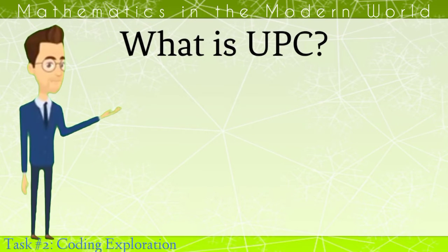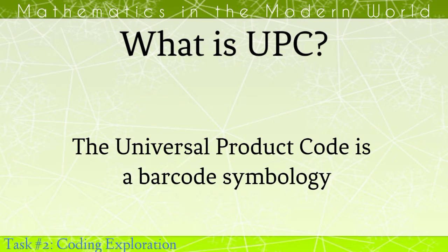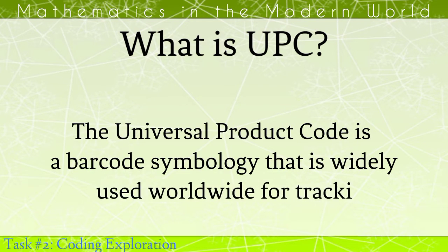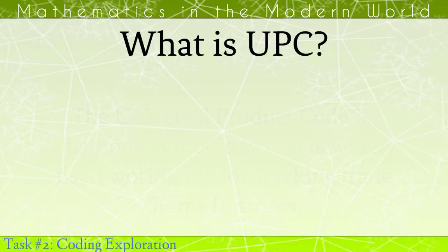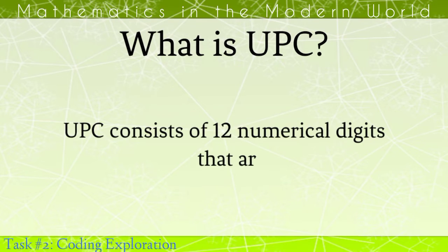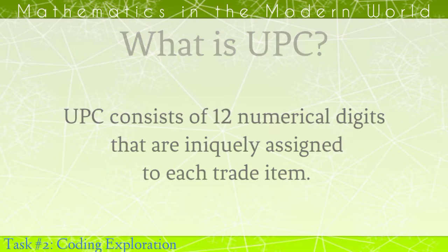But before that, what is UPC? UPC is the universal product code, a barcode symbology that is widely used worldwide for tracking trade items in stores. UPC consists of 12 numerical digits that are uniquely assigned to each trade item.